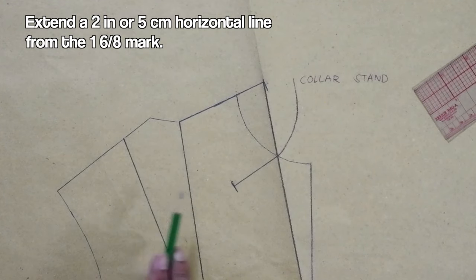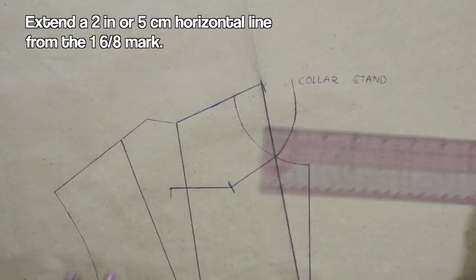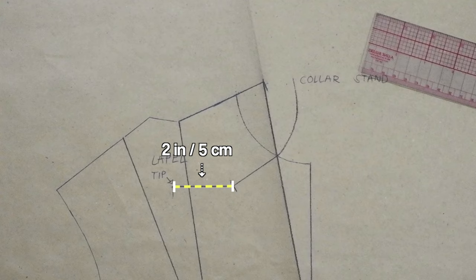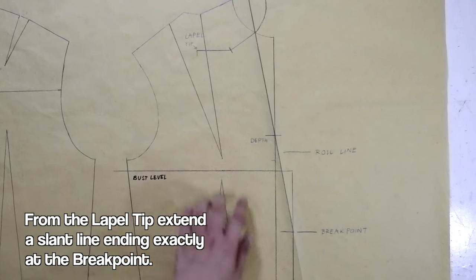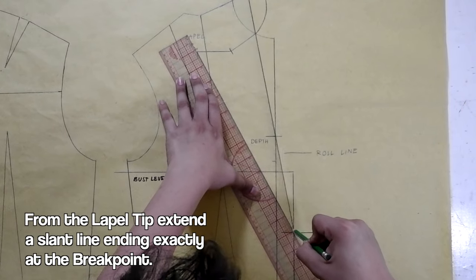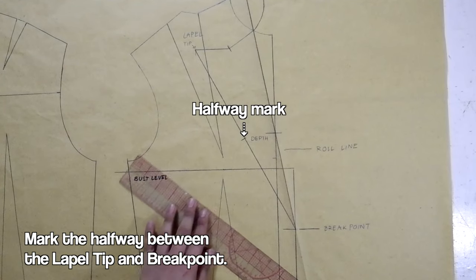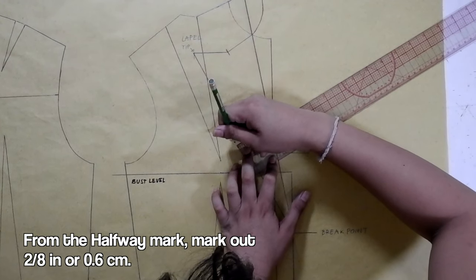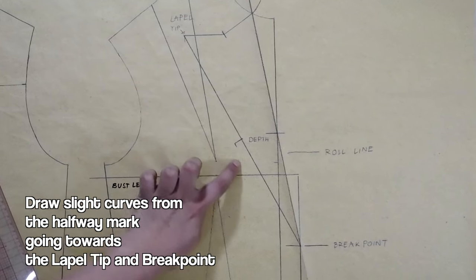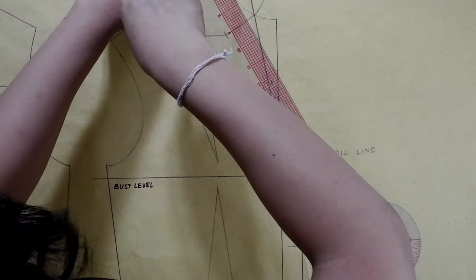Next, from the last measurement that we did, extend a 2 inches or 5 centimeters horizontal line. And label this as the lapel tip. From the lapel tip, connect another slant line ending exactly at the break point. There you go. Next, mark the halfway between the lapel tip and the break point. And from the halfway mark, mark out 2/8 of an inch or 0.6 centimeters. From the 2/8 halfway mark, using your ruler, draw a slight curve going towards the lapel tip and the break point. And there you go, guys.